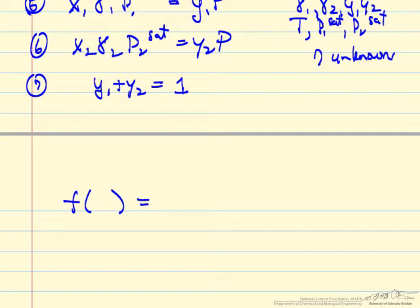For this first equation, for equation five, it means x1, gamma 1, p1 sat, minus y1p, that's what we want to be zero.